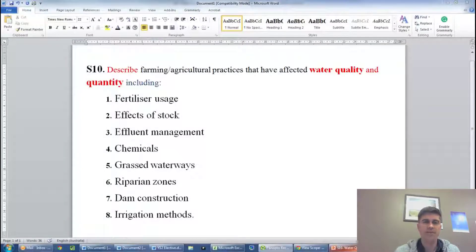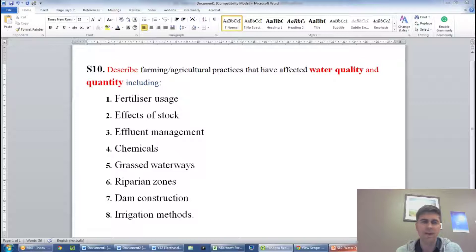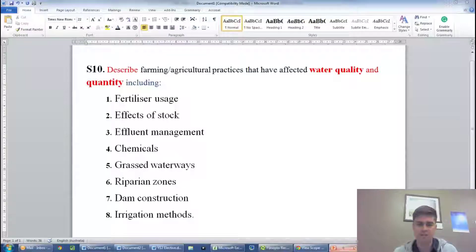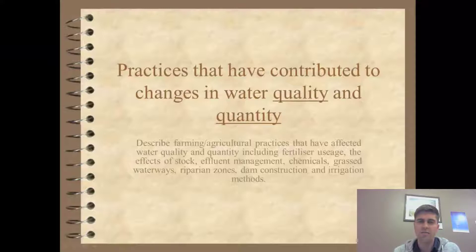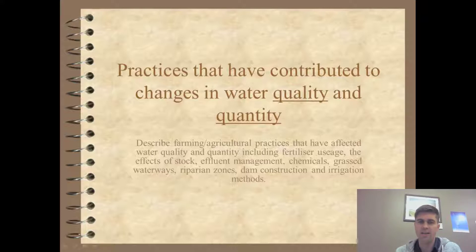This is dot point S10, Sustainability 10. We're describing farming and agricultural practices that have affected water quality and quantity — both the quality and the amount. The eight things we're going to look at are fertilizer usage, effect of stock on water quality and quantity, effluent (faeces and urine from animals), chemicals that are sprayed, grass waterways, riparian zones, dam construction, and irrigation methods. This is an 'including' dot point, which means all of these things could be asked for by name in the exam, so you need to know about each of the eight.